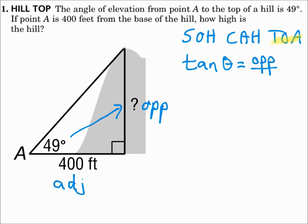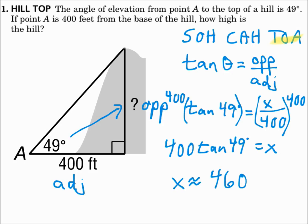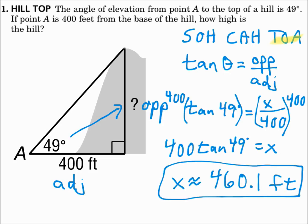Tangent theta equals opposite over adjacent. Substitute in: theta is 49 degrees, opposite is x, and adjacent is 400. That's x divided by 400, so multiply both sides by 400 to get x by itself. So 400 times tangent 49 equals x. When you punch that in, x is approximately 460.1 feet. Is that a logical answer? One side is 400 feet, and 460.1 is very close to it in length, so yes, it's a logical answer.